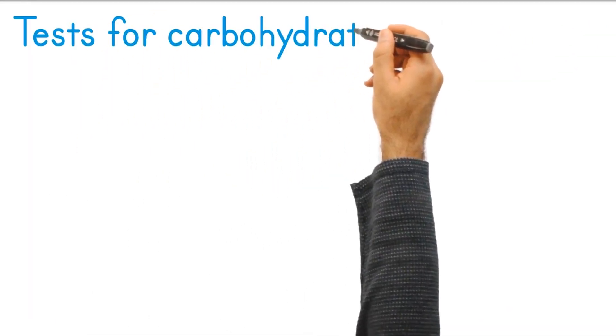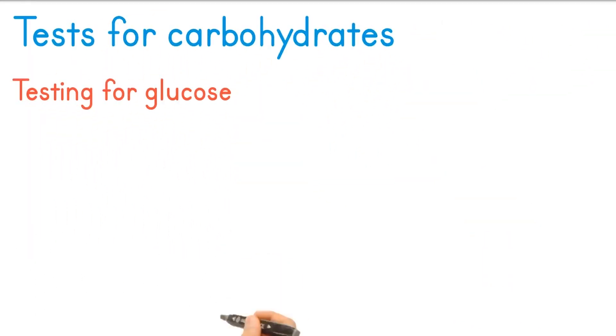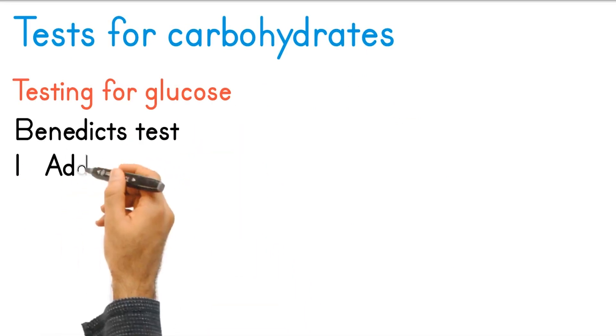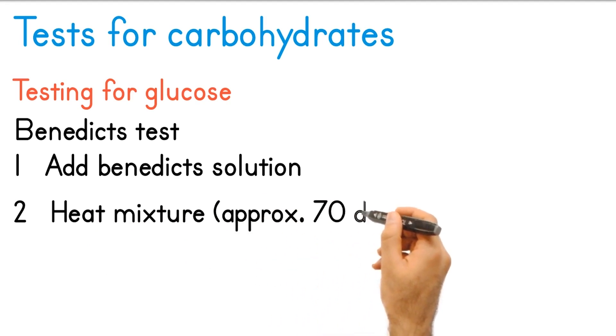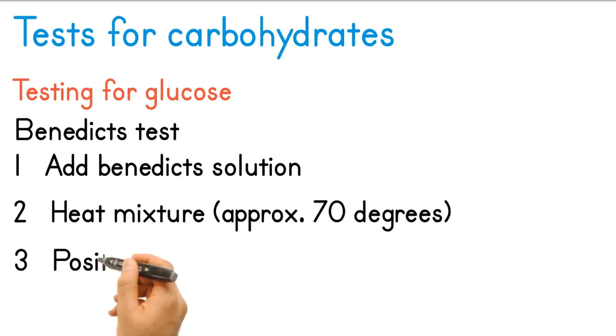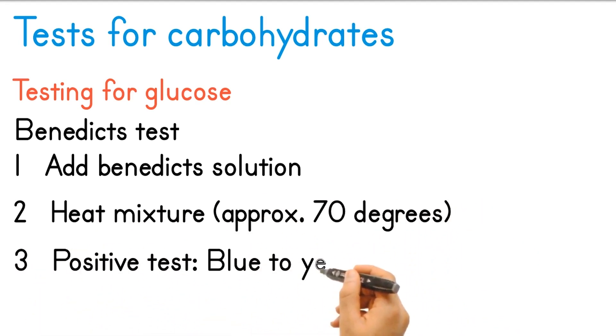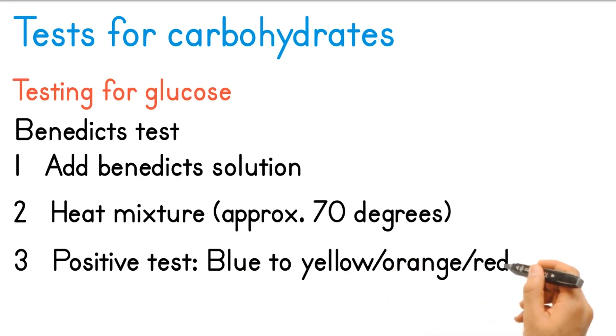Tests for carbohydrates. Testing for glucose, the Benedict's test. First, add Benedict's solution. Then, heat the mixture to approximately 70 degrees Celsius. A positive test is when the solution changes from blue to yellow, orange or red, depending on the concentration.